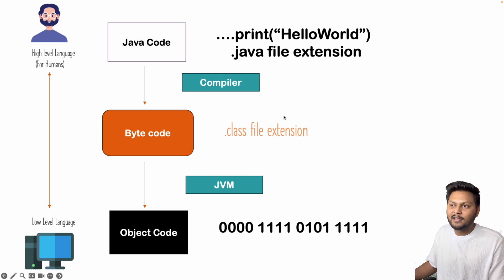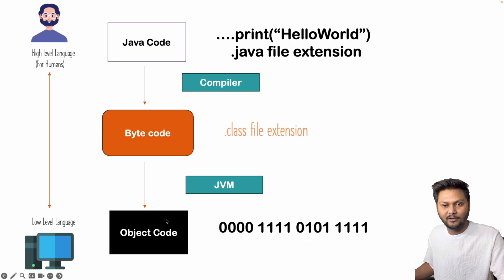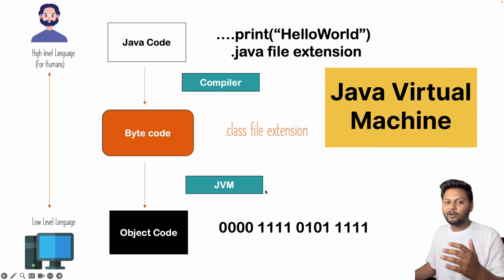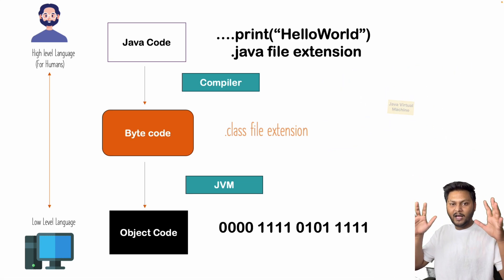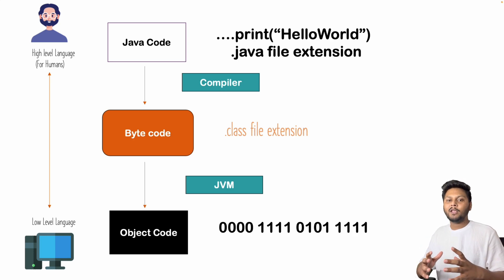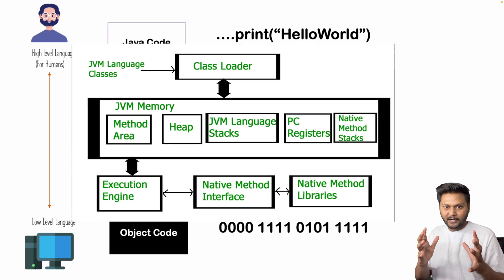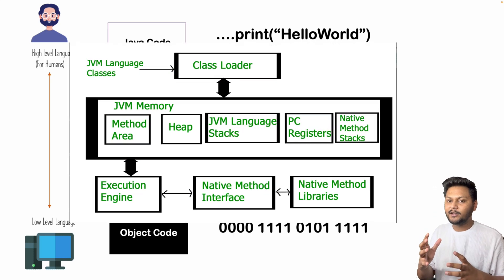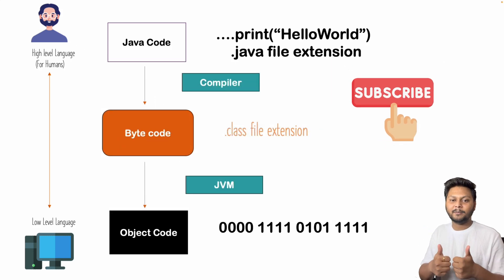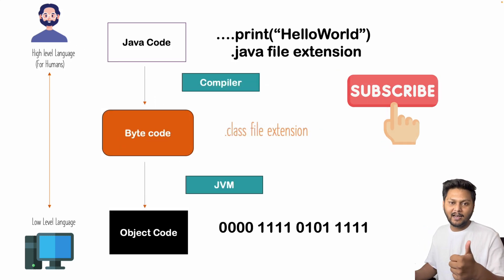Once we have that .class file, there is something called the JVM — Java Virtual Machine — which runs those class files and executes your Java code on the machine. JVM has a big architecture with many components inside it. I'm going to cover JVM architecture in the next video, so stay tuned. If you like the video, do subscribe and hit the like button.